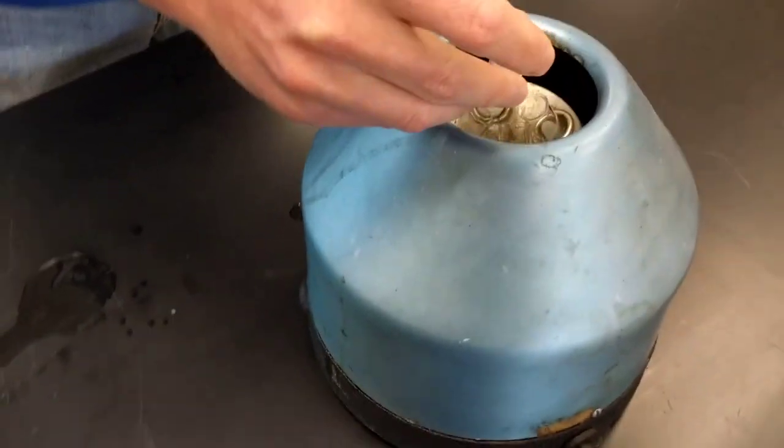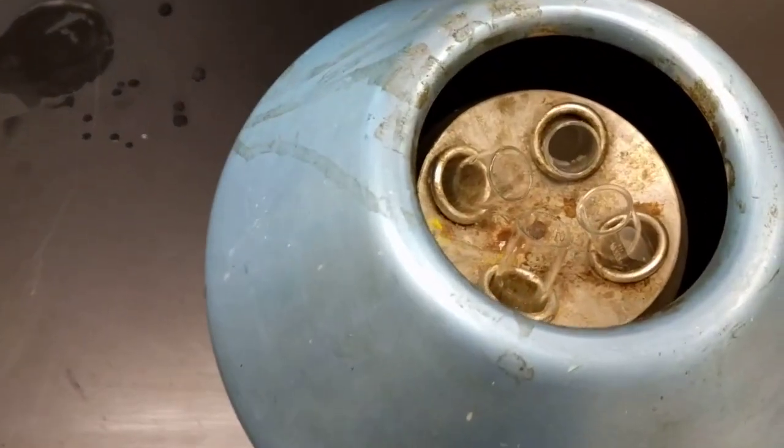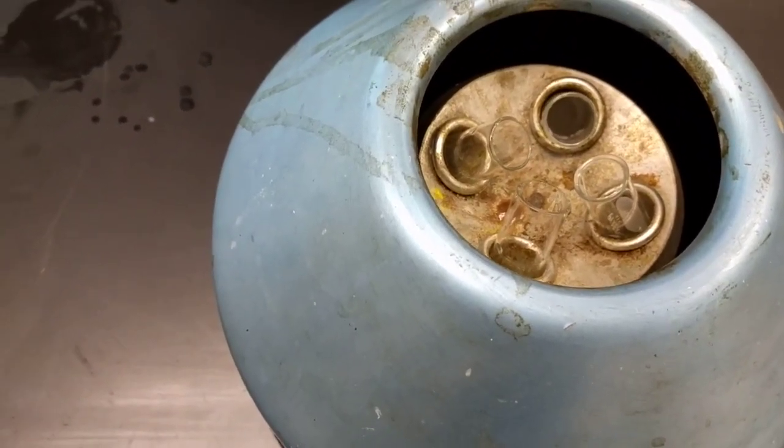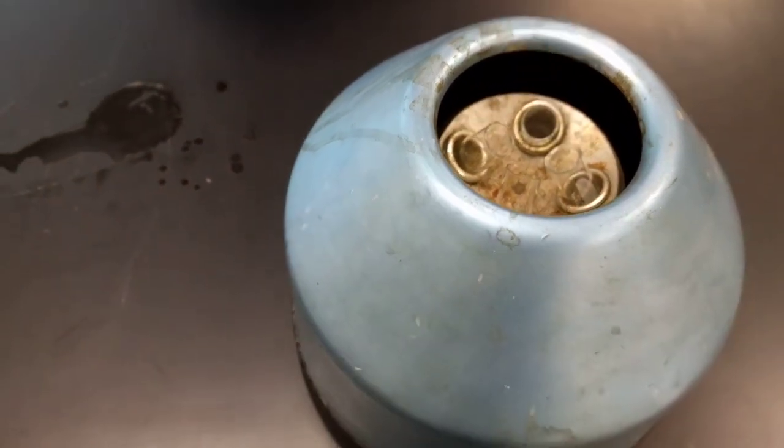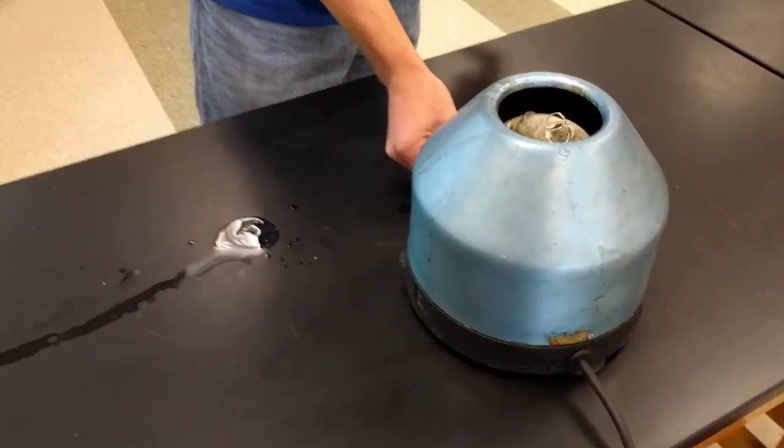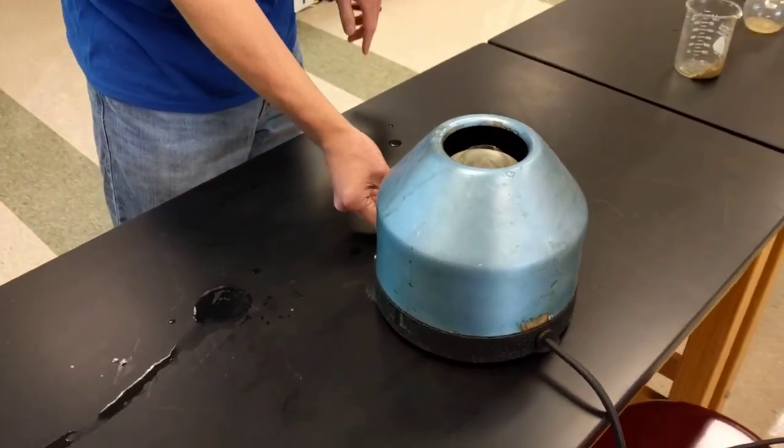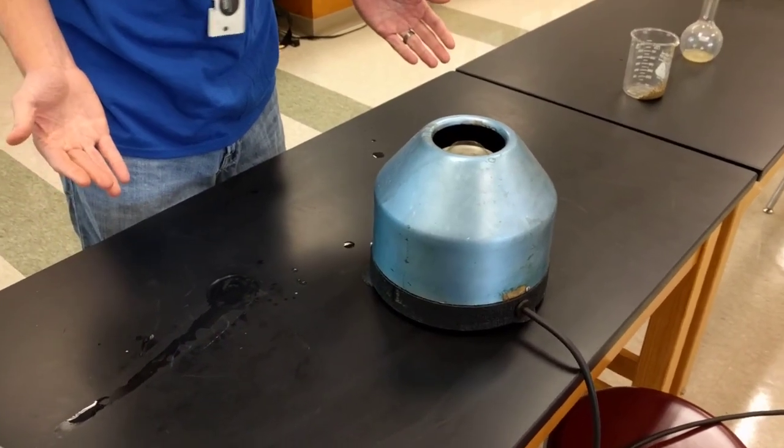As you can see in the top of the centrifuge here, we have four vials. Each of them are filled with a liquid. This is the one we're going to be looking at. The centrifuge is going to be spinning at about 3,000 RPMs.